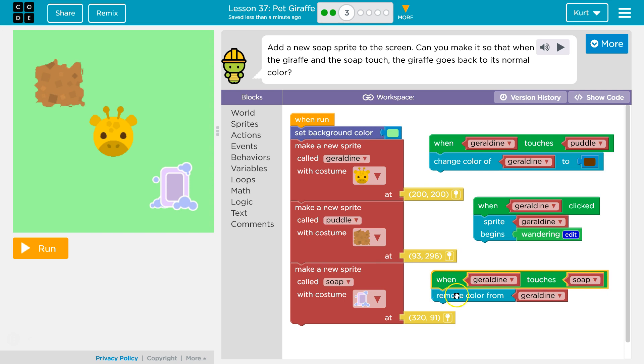So when Geraldine touches the soap, the color should be removed. That will trigger removing the color. Just like when Geraldine touches the puddle, it triggers brown.